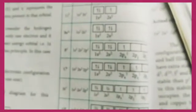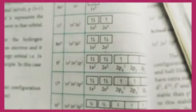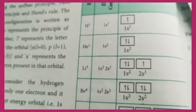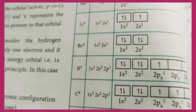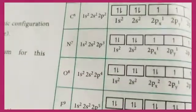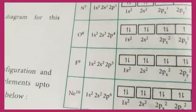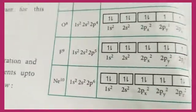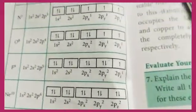To summarize the first 10 elements in order: Hydrogen, Helium, Lithium, Beryllium, Boron, Carbon, Nitrogen, Oxygen, Fluorine, and Neon. We write the electronic configuration and orbital diagram for each of these elements based on their atomic numbers.